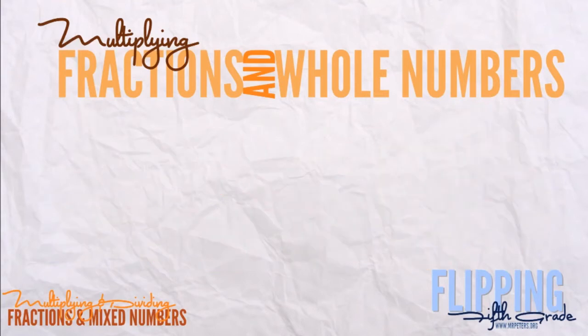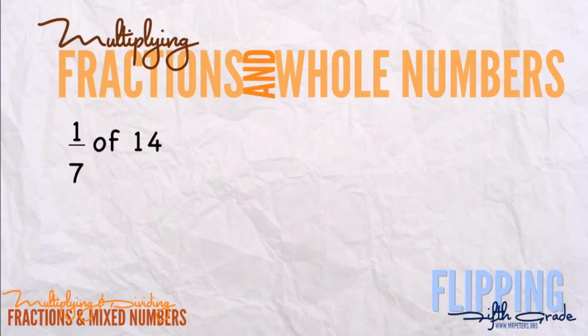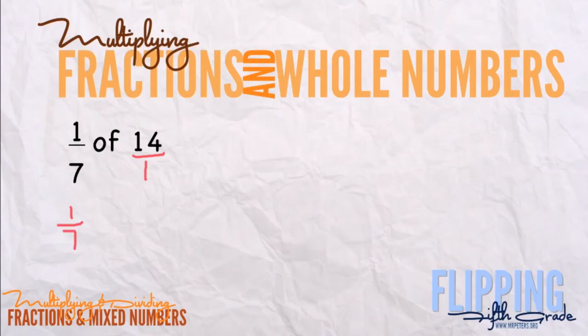But sometimes we don't have that visual, so let's look at it in a more practical way. The first problem is one-seventh of 14. The word 'of' means multiply. The first thing I want to do is make that whole number into a fraction, and to do that we simply put it over one. So 14 over one is the same as 14, because 14 divided by one is 14. Then we have one-seventh times 14 over one.